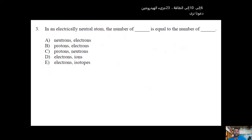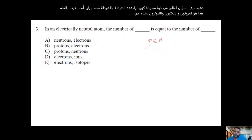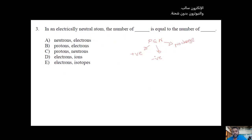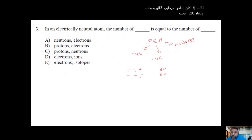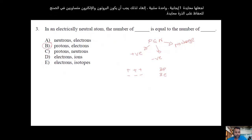In an electrically neutral atom, the number of protons and electrons are equal. In an atom, protons are positive, electrons are negative, and neutrons have no charge. So if there are three protons, to cancel this out you need three electrons as well. Protons and electrons must be equal to keep the atom neutral.